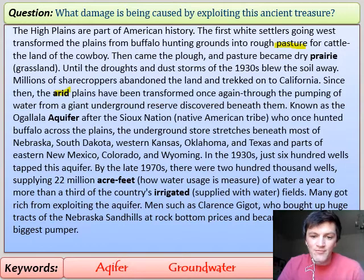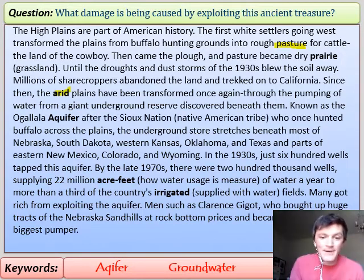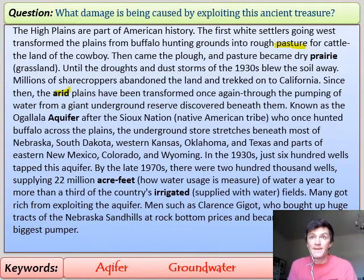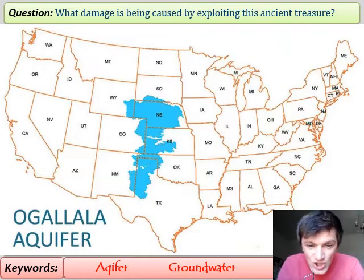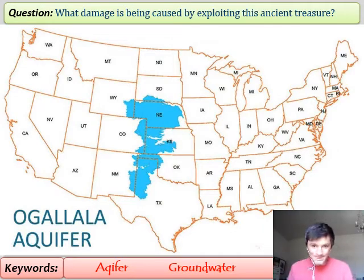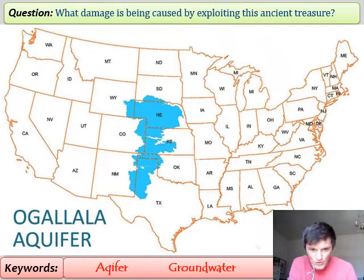Many got rich from exploiting the aquifer — men such as Clarence Jujo bought up huge tracts of Nebraska's sandhills at rock-bottom prices and became the aquifer's biggest pumper. He exploited the water, built the pumps, and sold the water to farmers who needed it to grow crops, giving him control over this natural commodity. This map shows where the aquifer is found underground — Nebraska isn't covered in water at the surface, but dig down into that permeable rock and that's where the aquifer was found.